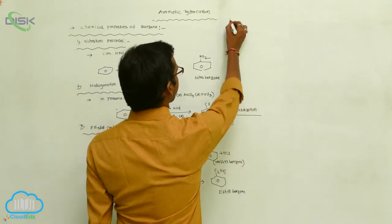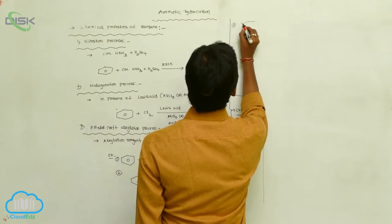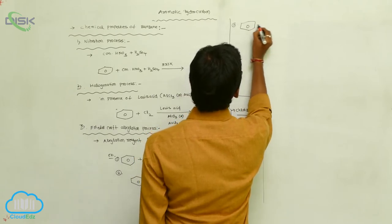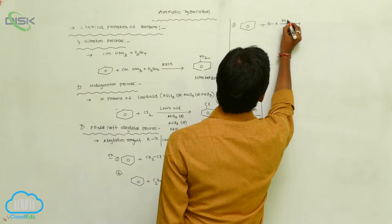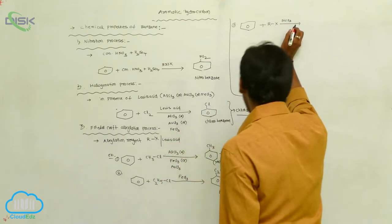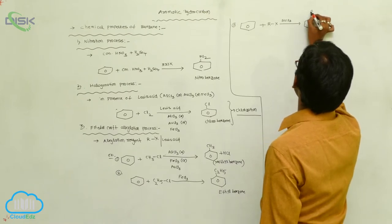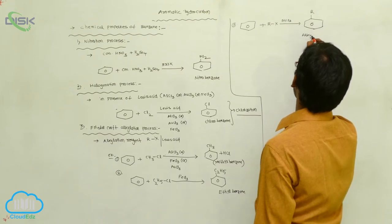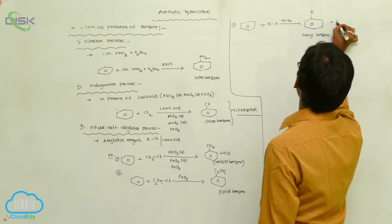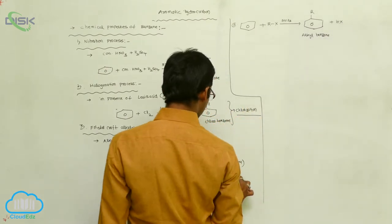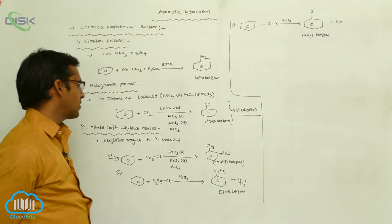In the general reaction, benzene is reacted with an alkyl halide in the presence of Lewis acid AlCl3 or FeCl3. The alkyl group (R) is substituted on benzene, giving alkylbenzene, and the remaining product is HX. This is called the Friedel-Crafts alkylation process.